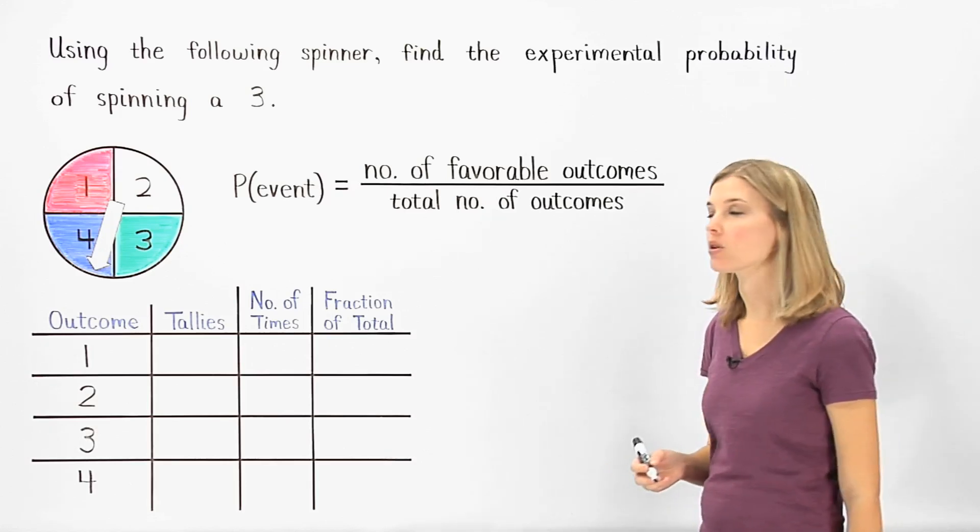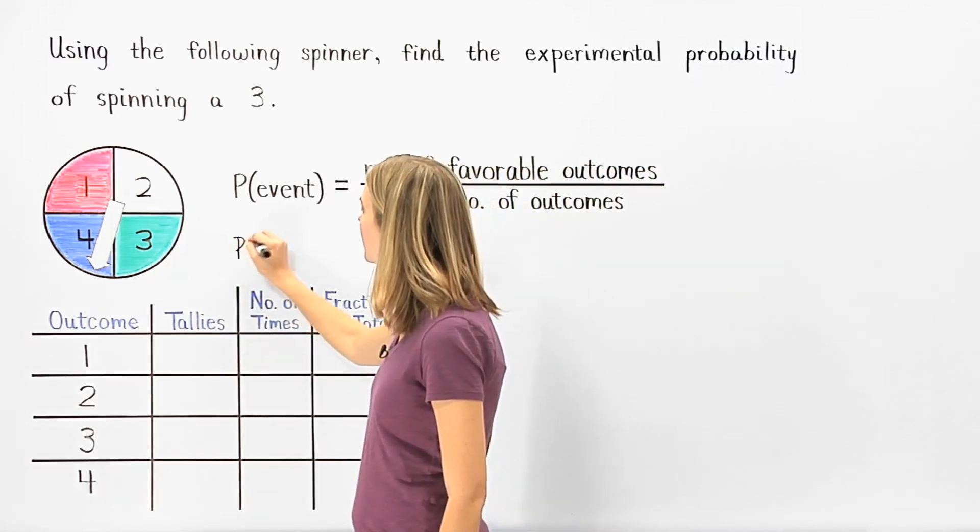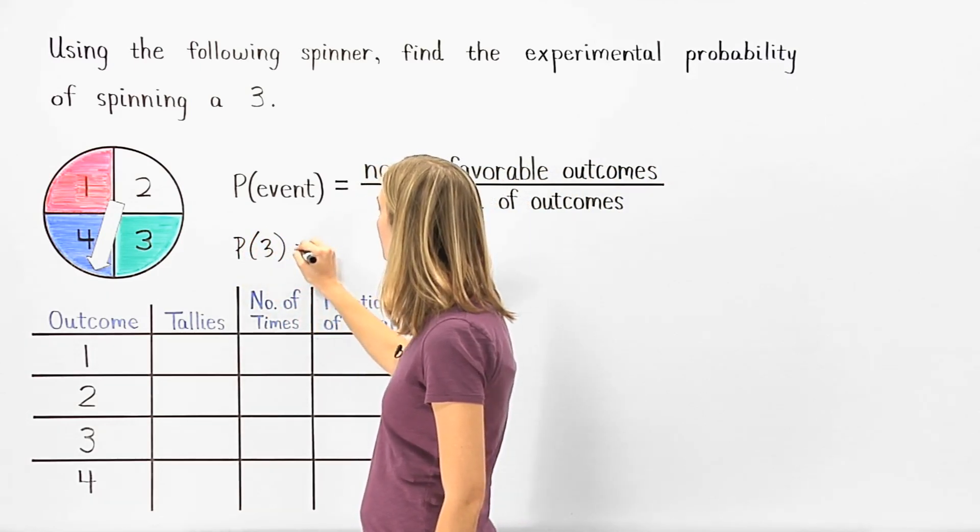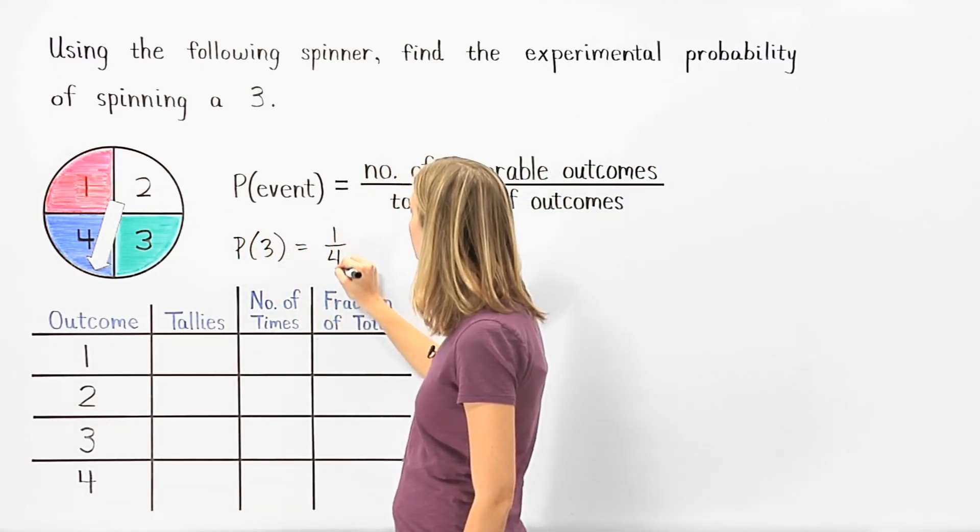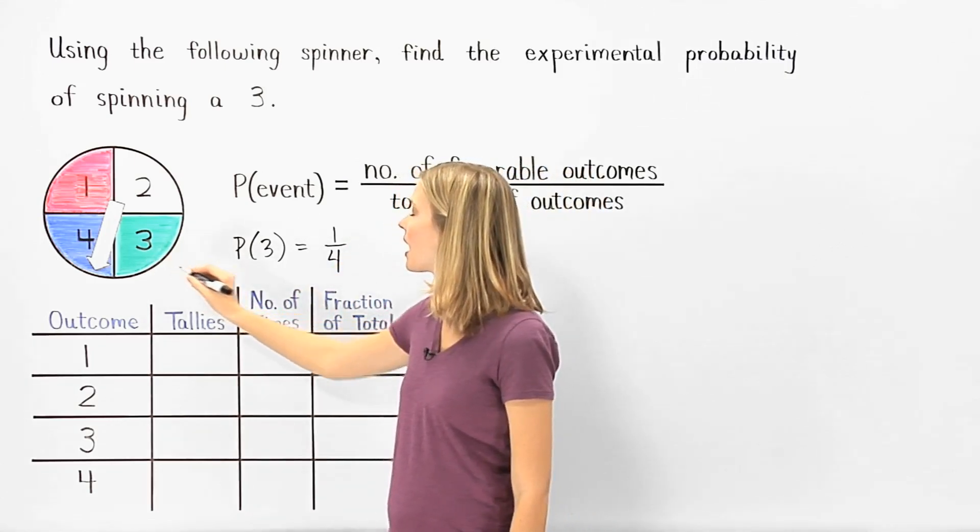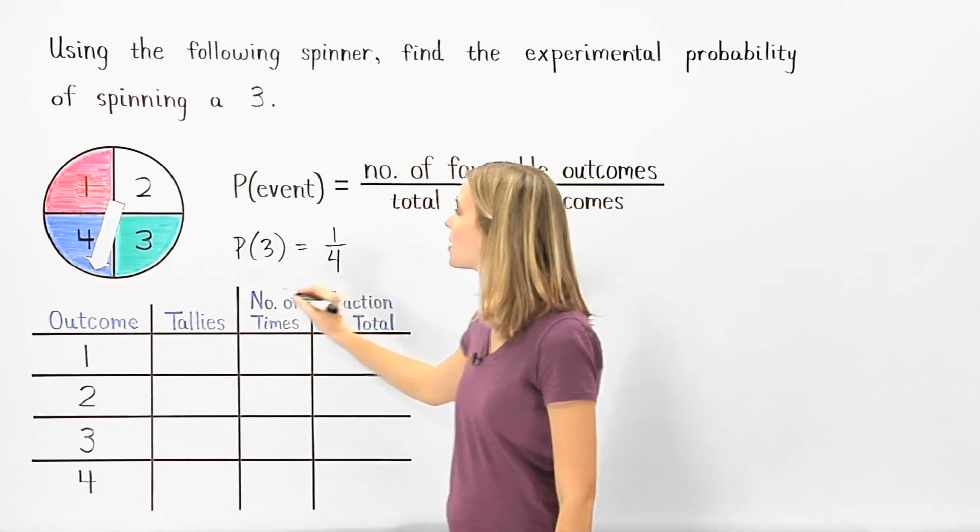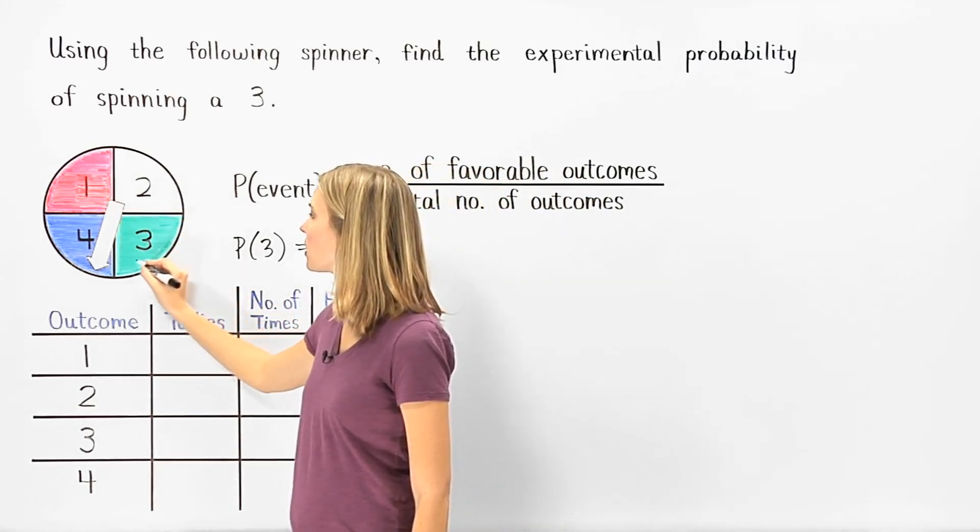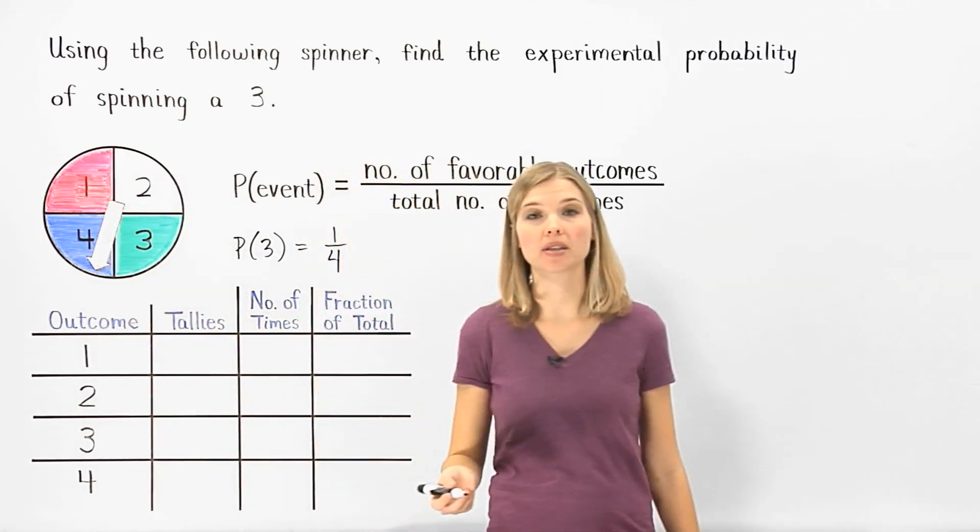For example, using the given spinner, the probability of spinning a 3 is 1 fourth. Because there's one favorable outcome, spinning a 3, and there are four possible outcomes: 1, 2, 3, 4, and each outcome is equally likely.